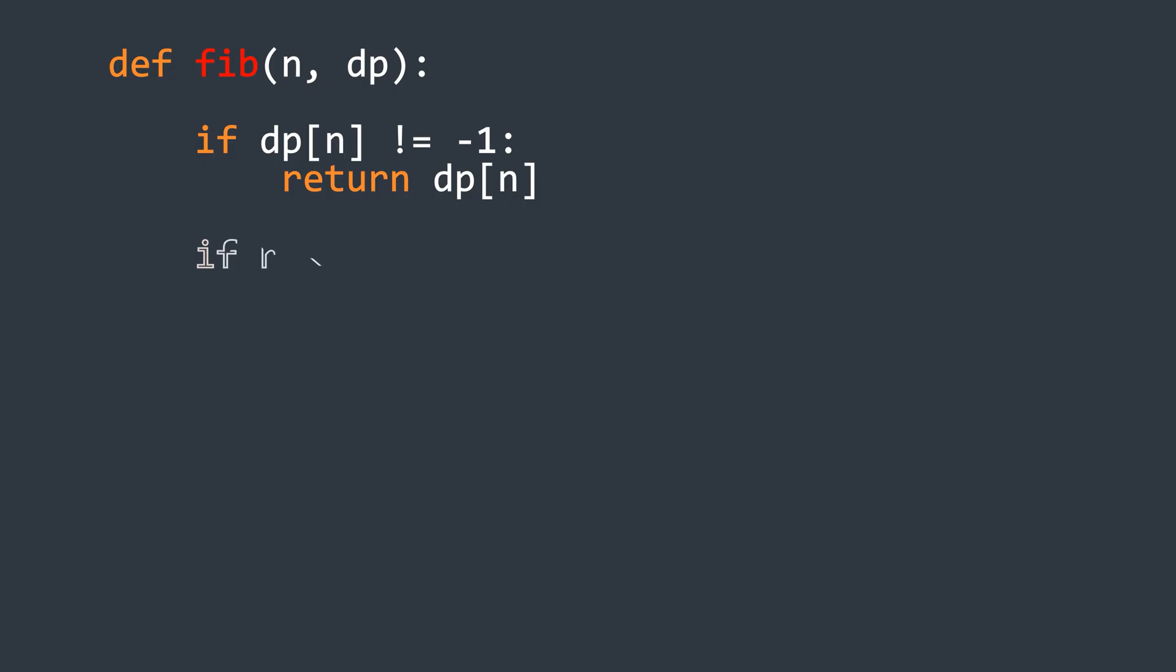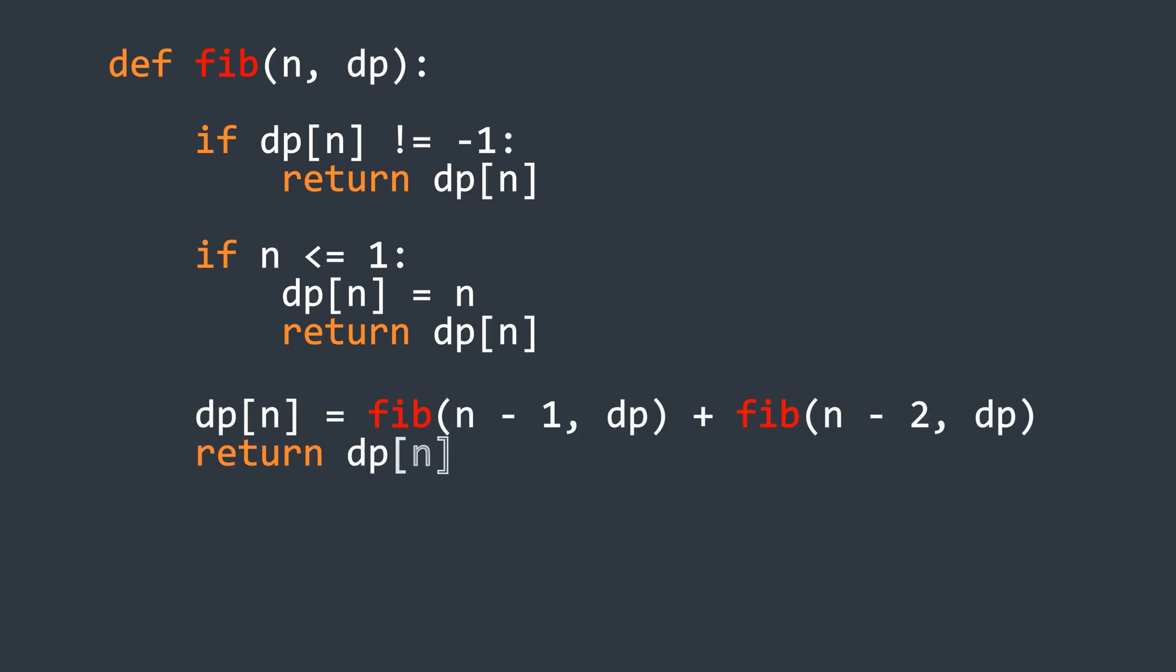And next we check for the base case. If n is less than or equal to 1, we set the value at index n to n and return it. Otherwise we recursively calculate the value by adding the last two computed values and store it in the array. Finally, we can run this function by choosing a test value n and initializing an array with all the elements set to minus 1 before calling the function.